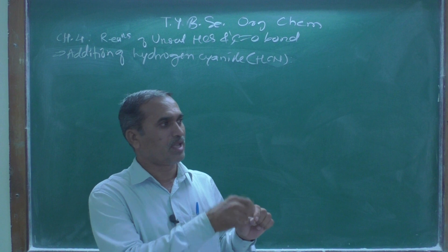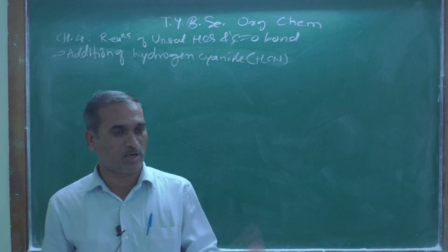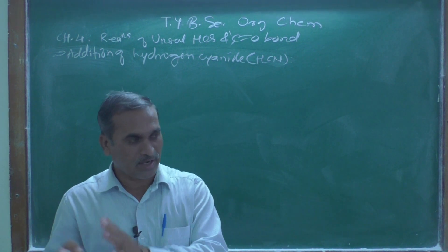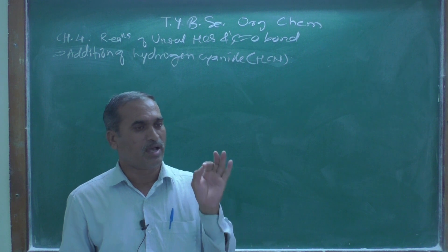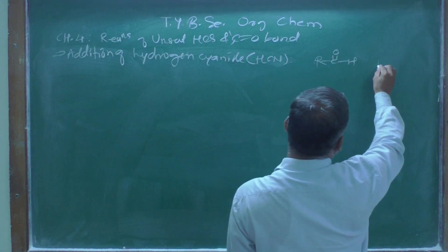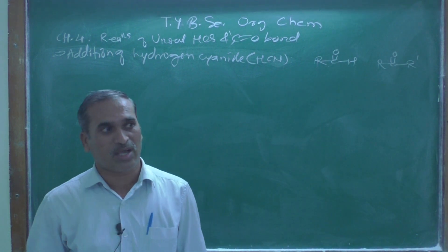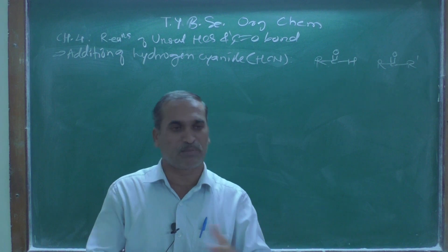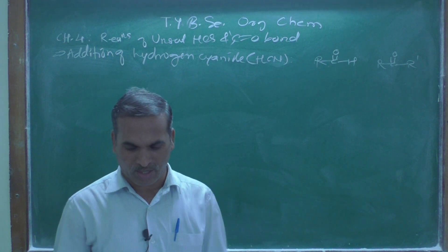As we know, the aldehyde has the general formula R-C double bond O-H, and the ketone has the general formula R-C double bond O-R', where R' may be an aliphatic or aromatic group depending on its nature, giving us different types of organic compounds.